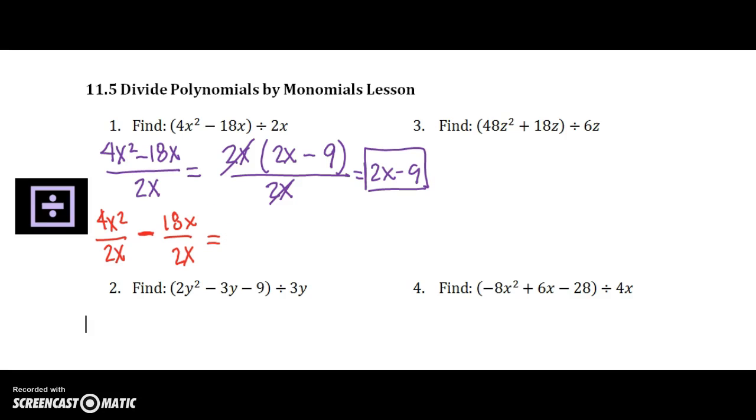I personally think that factoring is faster, but this is one method and I want you to be aware that you do have options. So I'm going to pick a different color to cancel. 2 goes into 4 two times. This x cancels with one of those x's, so I have 2x left. 2 goes into 18 nine times, and the x's cancel. And so I also get 2x minus 9.